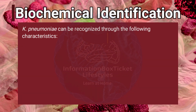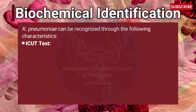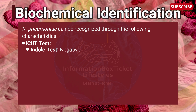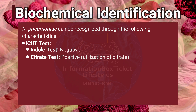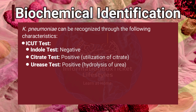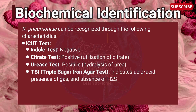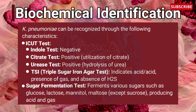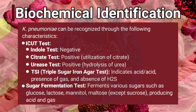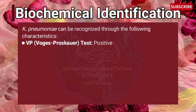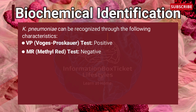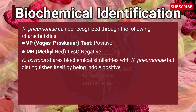Biochemical identification: Klebsiella pneumonia is recognized by the ICUT test — Indole (negative), Citrate (positive), Urease (positive). The Triple Sugar Iron agar test shows acid over acid with gas production and absence of H2S. Sugar fermentation: ferments glucose, lactose, mannitol, and maltose but not sucrose, producing acid and gas. VP (Voges-Proskauer) test is positive; Methyl Red test is negative. Klebsiella oxytoca shares similarities but is indole positive.